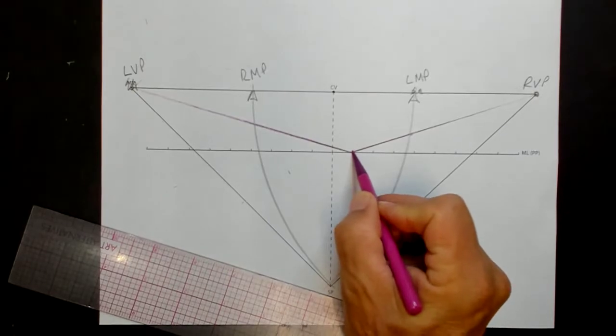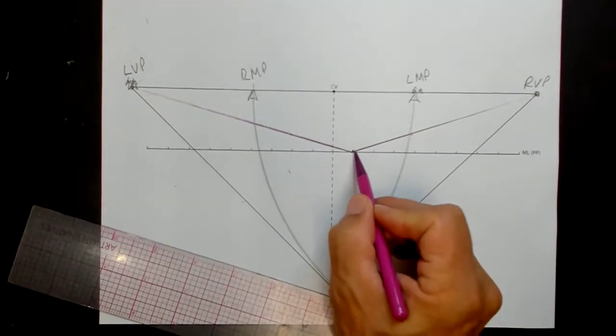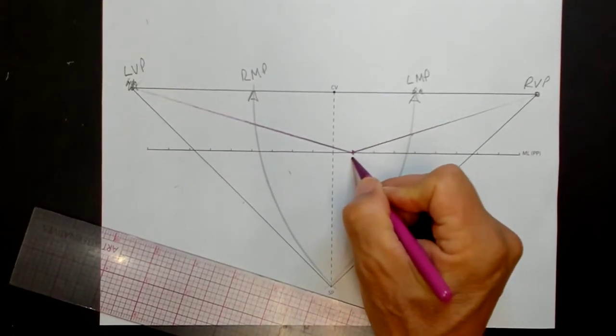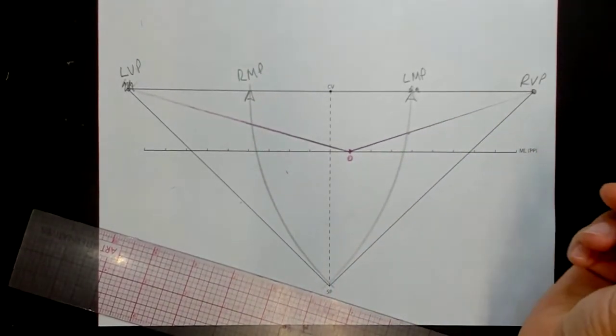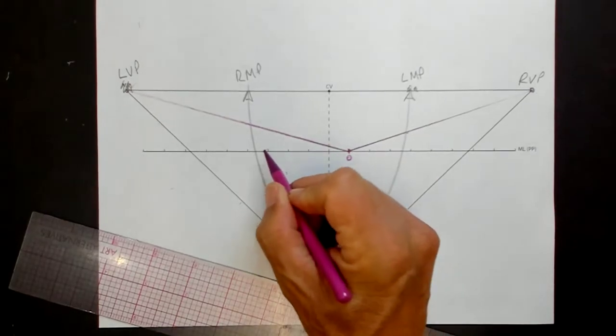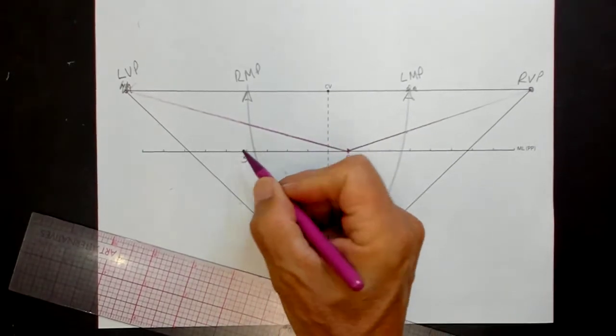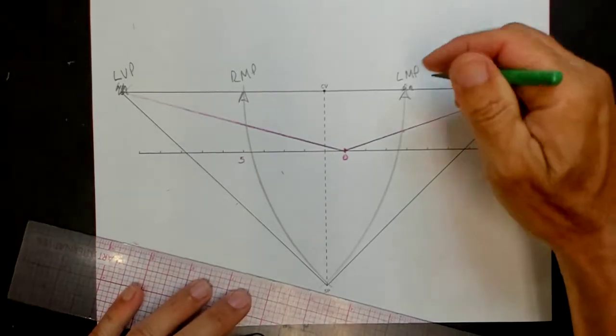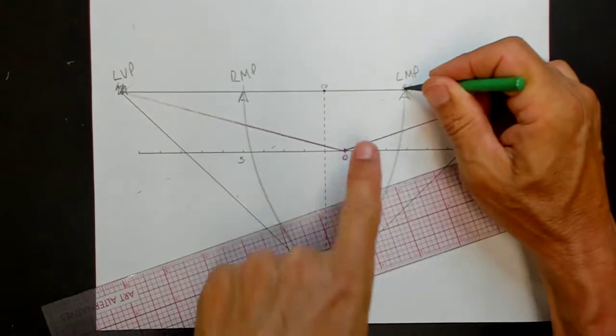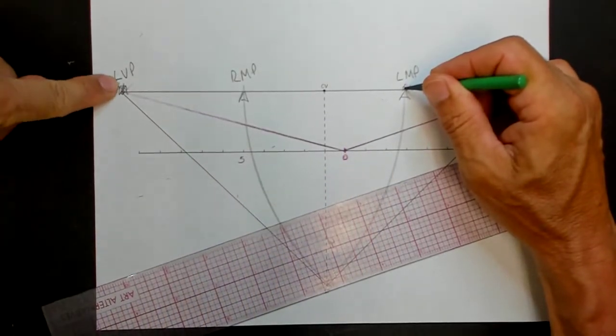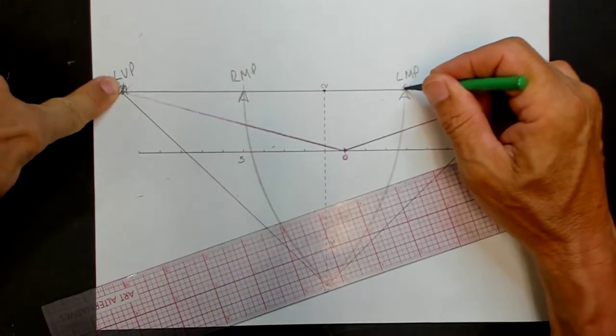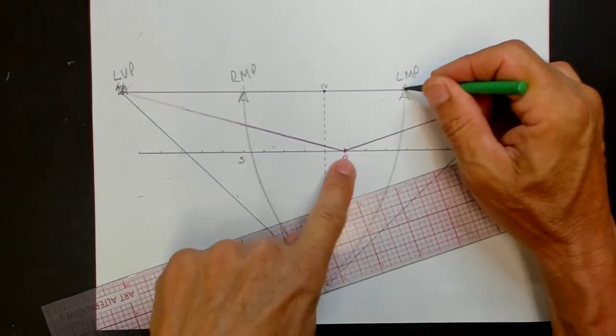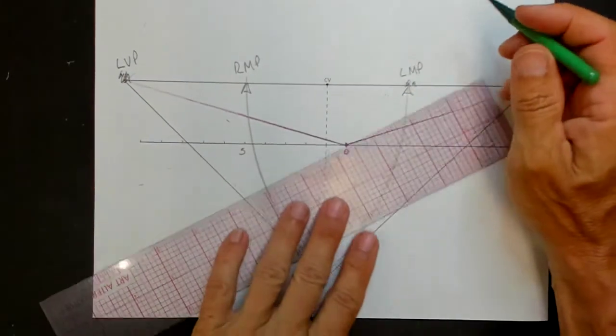And if we wanted to make this side, let's make this five. So here's zero right where it touches the picture plane. And we just count over one, two, three, four, five. And then go to the measuring point. So you want to use the left measuring point because you're measuring a line that goes to the left vanishing point. You want to think about what line you're measuring. If you're measuring a line that goes to the left vanishing point, you have to use the left measuring point.